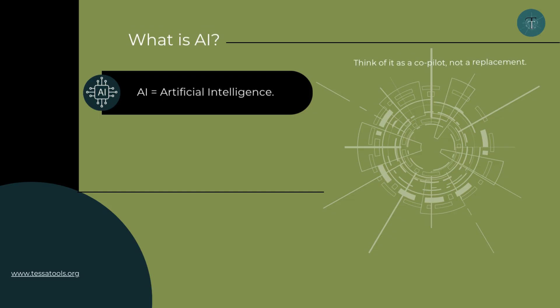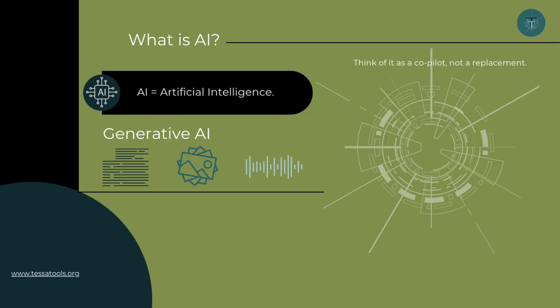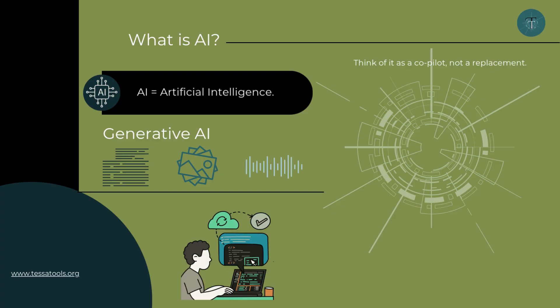When we talk about AI in social care we usually mean generative AI. These are tools that can create text, images or even audio based on the instructions we give them. They're not here to take over our jobs or judgment but to work alongside us, like a co-pilot helping with some of the heavy lifting.